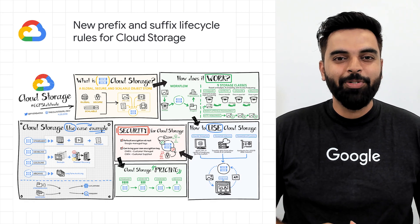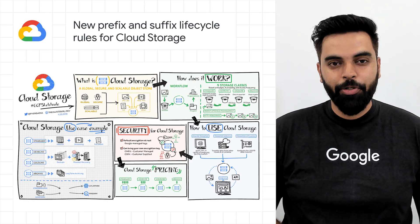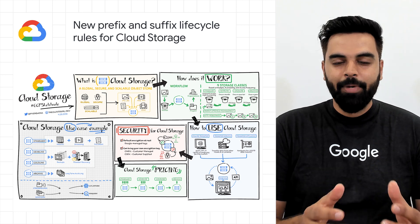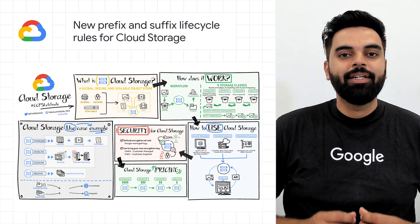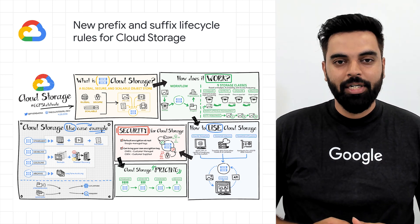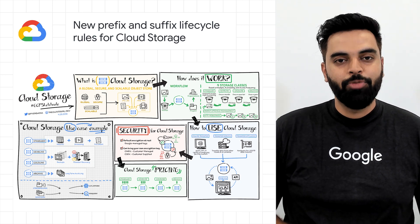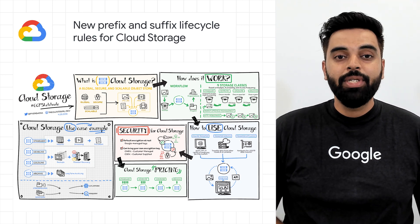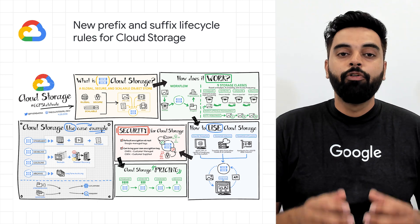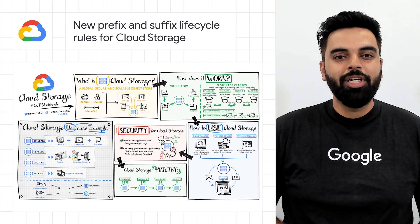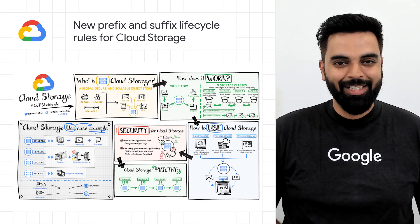Google Cloud Storage now has two new object lifecycle rules to help customers control storage costs. You can now add conditions on the object names, specifically the beginning or end of an object's name, using the matches prefix or matches suffix rule. For more information and example use cases, visit the blog post linked below.